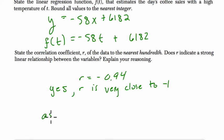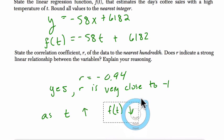If they asked you to explain more about the context here, this would mean as temperature goes up, then coffee sales, f of t, go down. I should fix this. As temperature goes up, coffee sales go down.